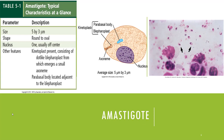The amastigote is usually equipped with one nucleus located near the center, and there is also a kinetoplast consisting of the parabasal body and the blepharoplast. As seen in the illustration, this tiny circular object is our amastigote, and the large circular structure with a darker color is the nucleus.